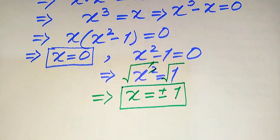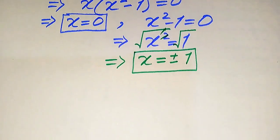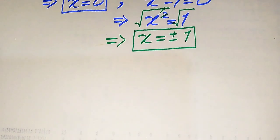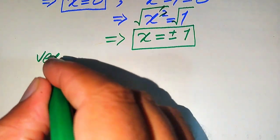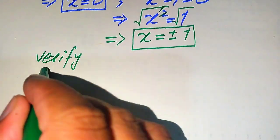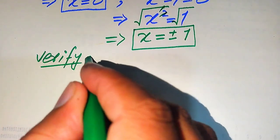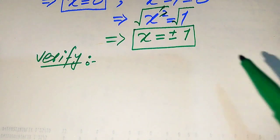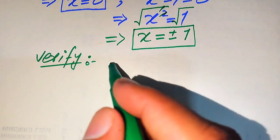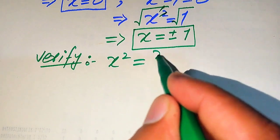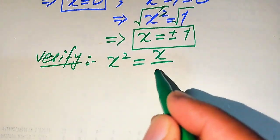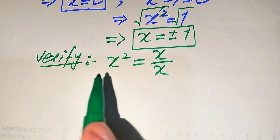When we apply the square root on both sides we write a plus-minus sign, so we get x equals plus or minus one. In the first method we get three roots of the given equation. Now we need to verify which of these roots are solutions and which are extraneous roots.